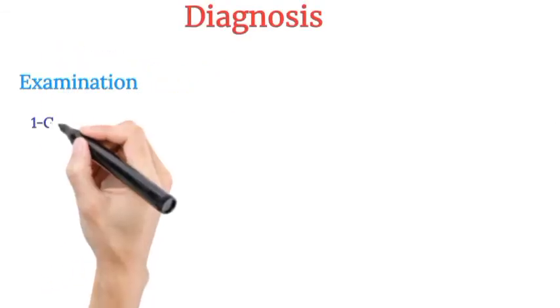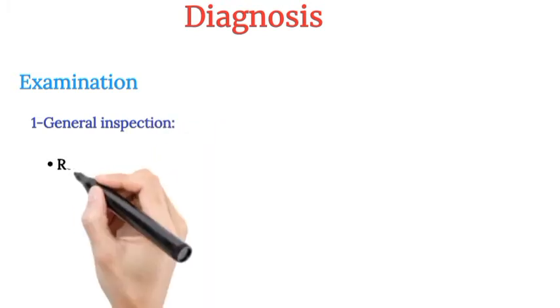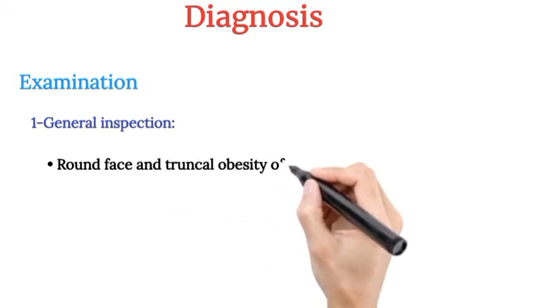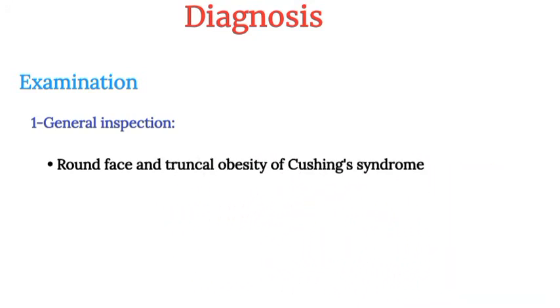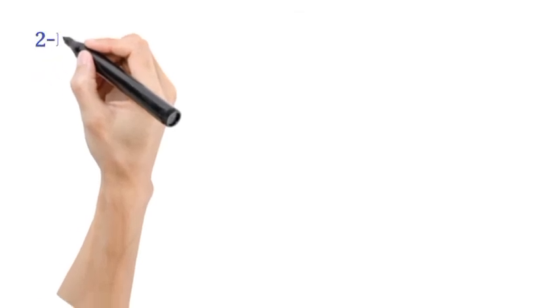Diagnosis - Examination: General inspection: Look for evidence of associated diseases such as round face and truncal obesity of Cushing's syndrome. Muscular development of upper extremities more than lower extremities suggesting coarctation of aorta.